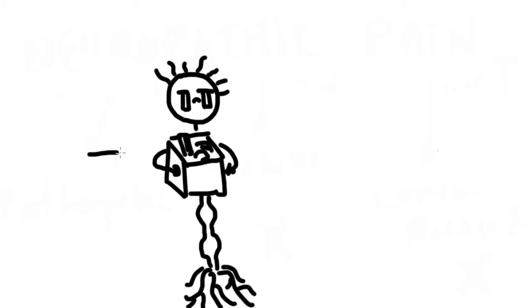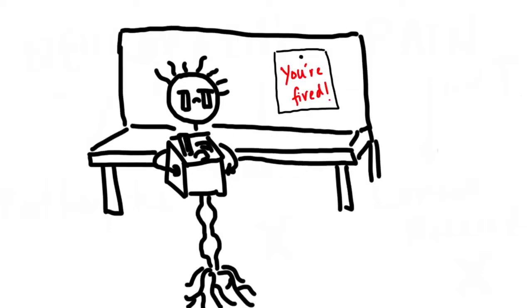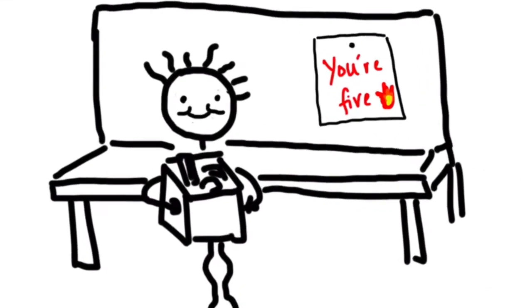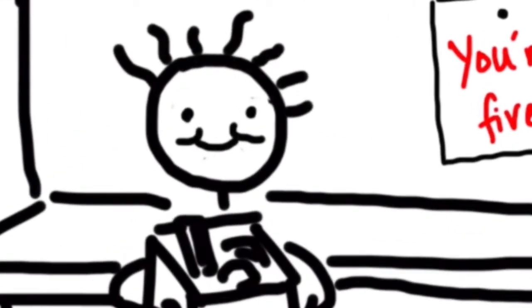Gabapentin targets neuropathic pain by overall decreasing the firing of neurons. That's right, neuron. You're not fired today. In fact, you're on fire. Good job. Anyways, gabapentin causes this effect through several mechanisms.